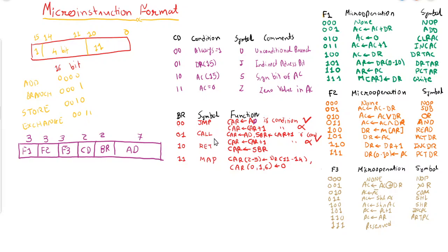10 = RETURN: at the end of a subroutine, the return address stored in SBR is loaded back into the control address register. 11 = MAP: once an instruction is fetched and decoded, its opcode bits 11–14 are mapped into bits 2–5 of the control address register (CAR), and bits 0, 1, and 6 of CAR are set to zero — converting the opcode to a control memory address.